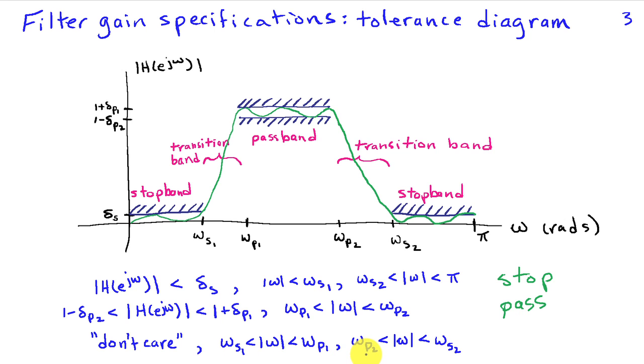And the upper transition band is from omega P2 to omega S2. Now, it's not that we don't care because we wouldn't want the gain in the transition band to be some really large value. But we're going to allow the filter flexibility in how it transitions from the pass to the stop band.